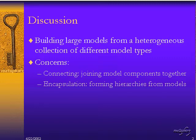Modeling dynamic systems is similar. One may use different model types to create a heterogeneous collection — a multi-model. A finite-state machine may capture the semantics of higher-level phase transitions, whereas an equational model captures the lower-level continuous-time specification. So both of these can be placed together.